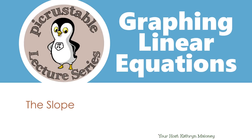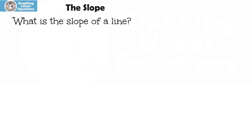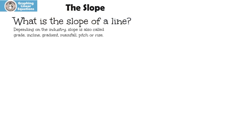Graphing Linear Equations: The Slope with me, Katherine. What is the slope of a line? Depending on the industry, slope is also called grade, incline, gradient, mainfall, pitch, or rise.